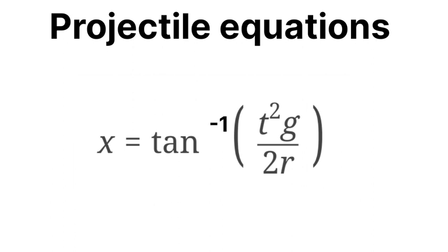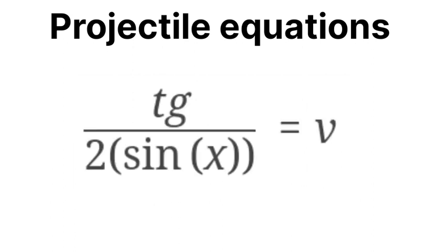By tan inverse, we can find θ. From that, we can find velocity, and from velocity and θ, we can finally find height.